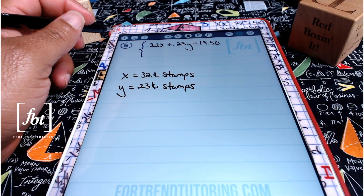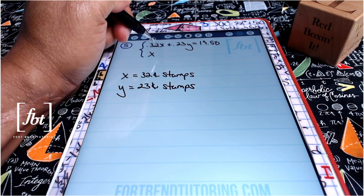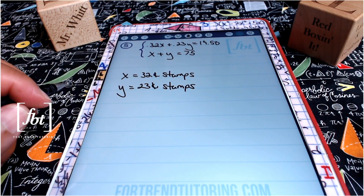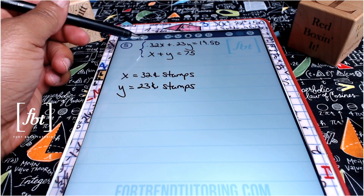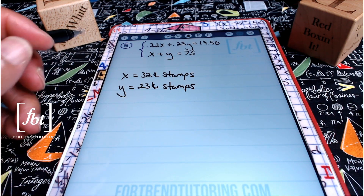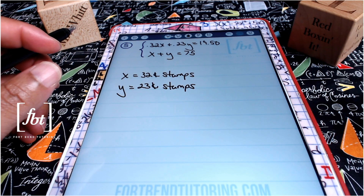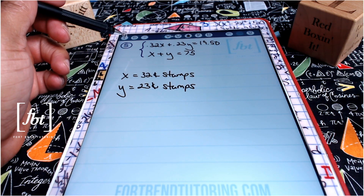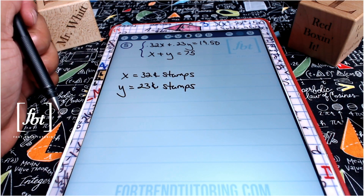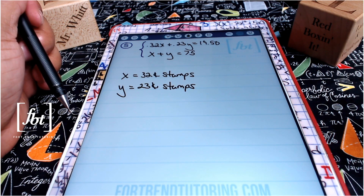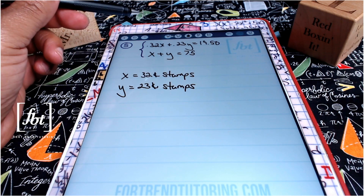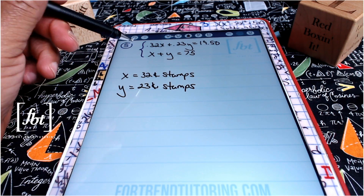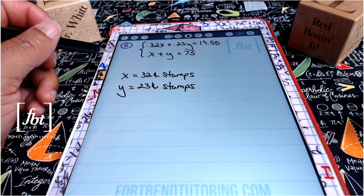Our next equation represents the total number of stamps Darshan bought. Since he bought some 32-cent stamps and some 23-cent stamps and the total was 75, we get x plus y equals 75. We now have two unknown variables x and y, as well as two equations — this is an ideal setup. Anytime you're solving a system of equations, especially using matrices, you want the number of unknown variables to match the number of equations.